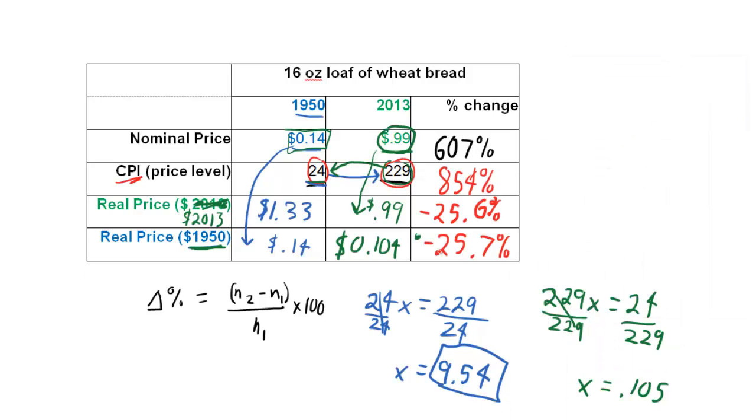That's correct. Does the base year matter? No, we get pretty much the same result. It's within one-tenth. 25.5% either way. And that shows us that the real price of this good has gone down.